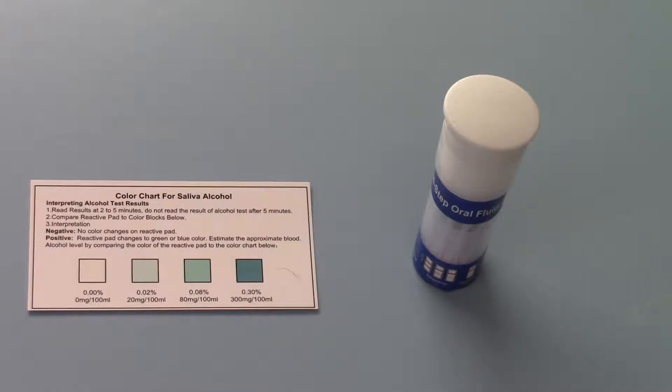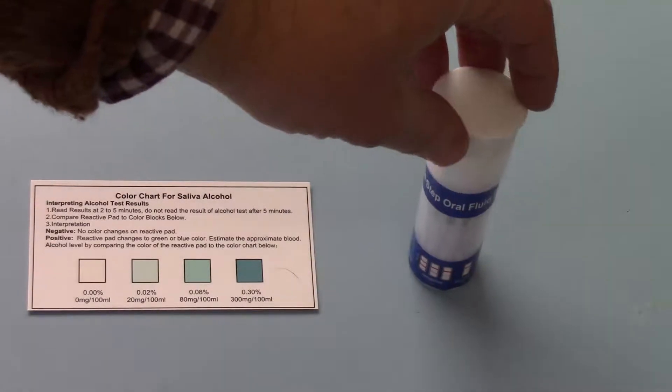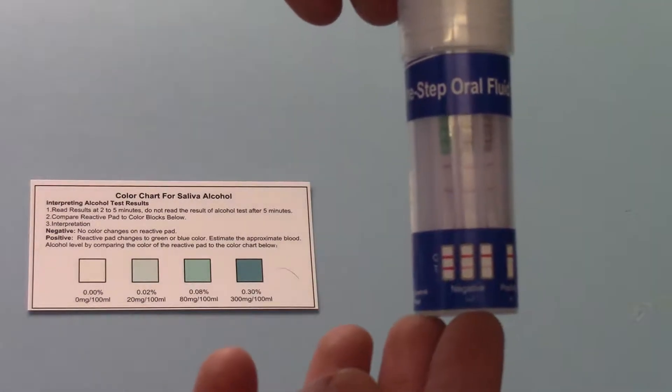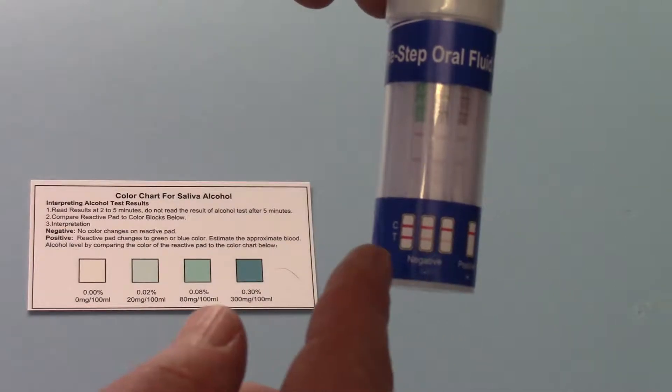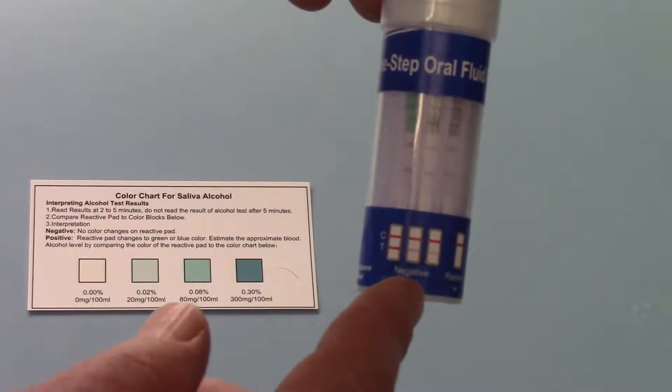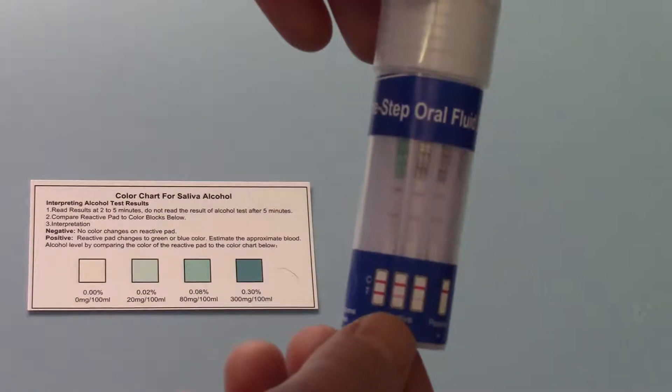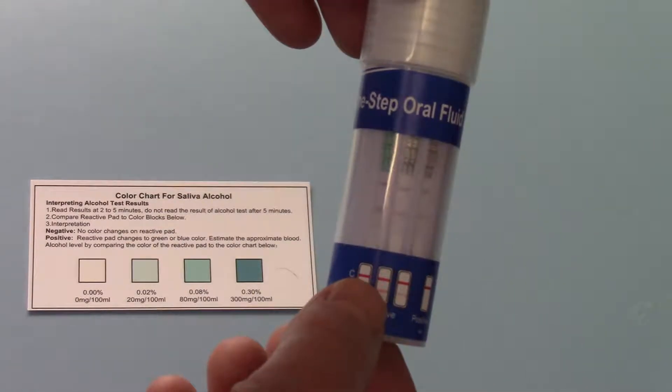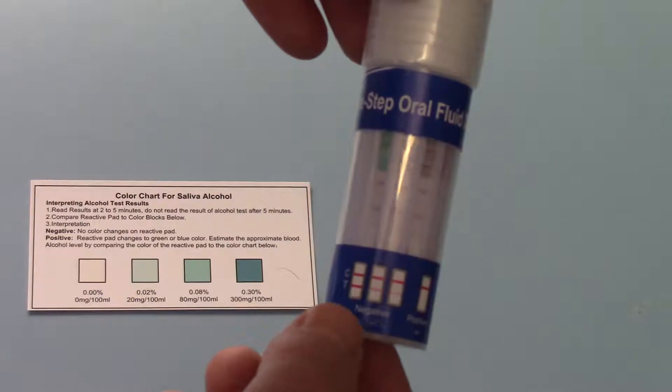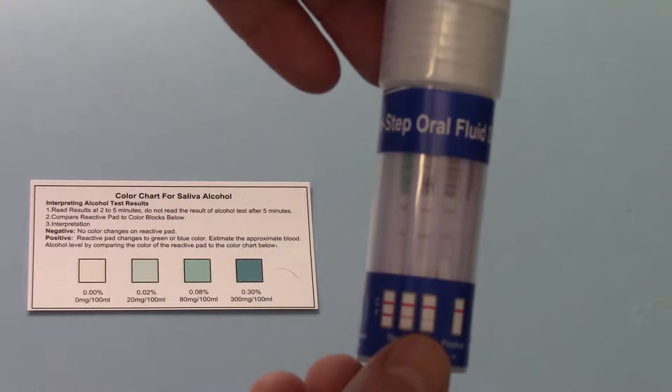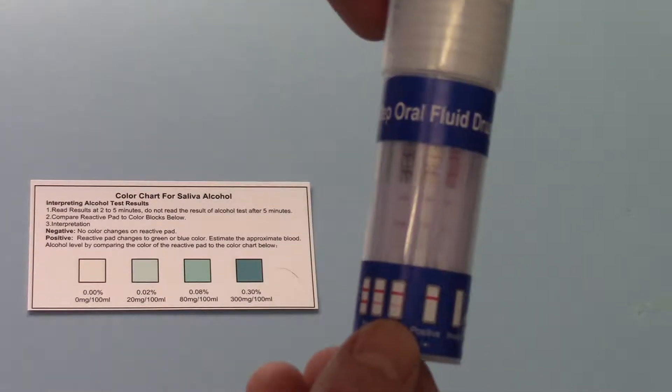This test has been running for five minutes and we have some nice clear results coming up on all six drug groups. On the bottom element of each of these barrels you're going to have some indicative result windows showing. This will show you a negative result where you've got a control line and a test line showing. It shows you the variation that can occur in the test lines from very strong through to very faint, but you should still always interpret those as a negative.